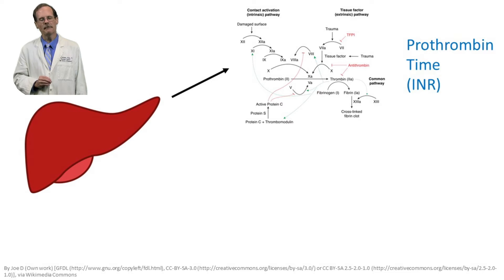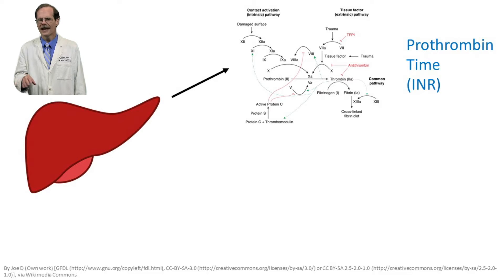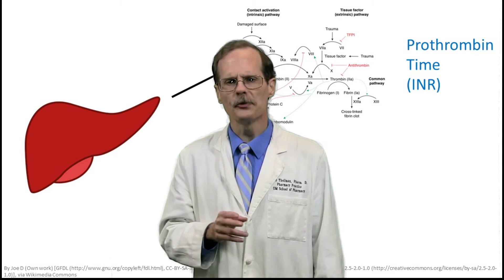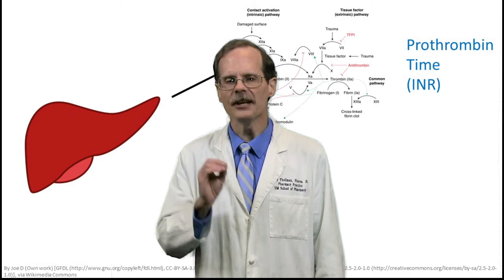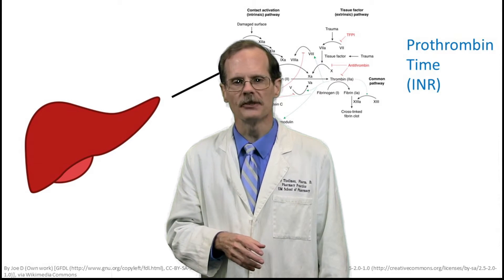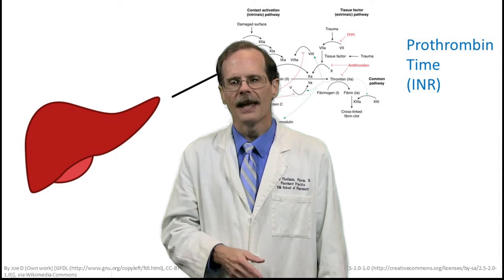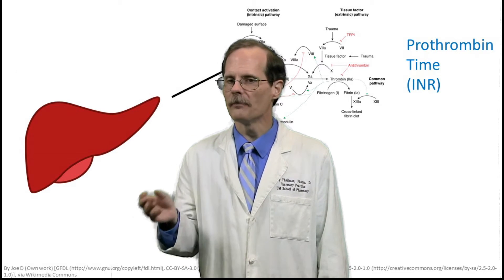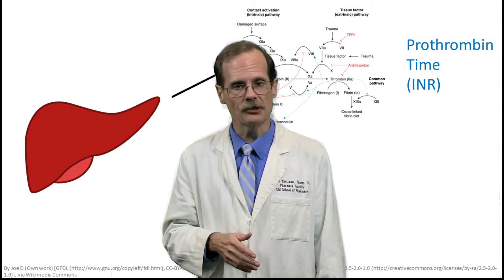The liver is the organ that manufactures clotting factors. If the liver isn't functioning properly, fewer of those clotting factors are produced and the patient's prothrombin time may increase. This is the same test that's used to monitor warfarin therapy, so it's pretty easy to get. You'll also see the prothrombin time expressed as an international normalized ratio, which is a way of increasing consistency of results from different labs. A typical INR is about 1.0. If the INR is greater than 1.7, that might indicate liver dysfunction.